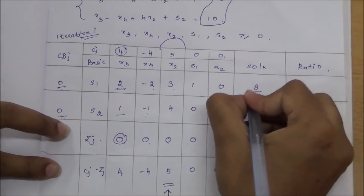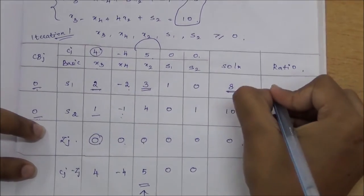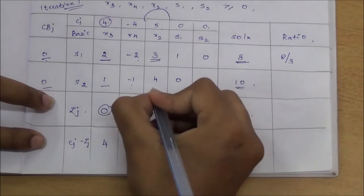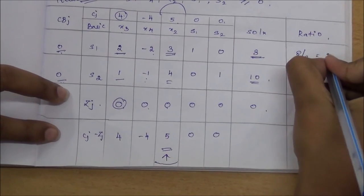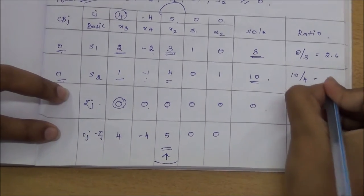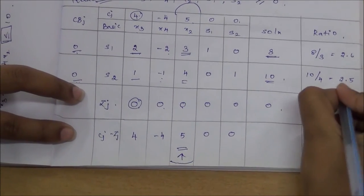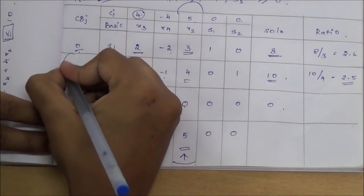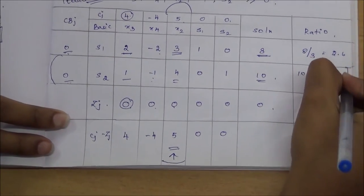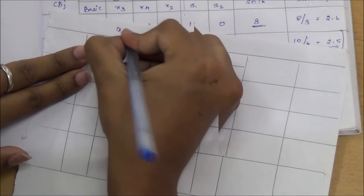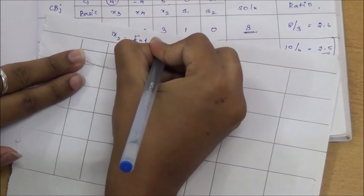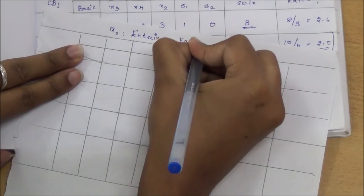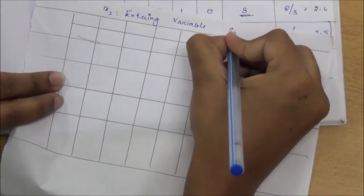To find the leaving variable, we compute ratios: 8 ÷ 3 = 2.67 and 10 ÷ 4 = 2.5. The smallest ratio is 2.5, so s2 is the leaving variable. Therefore x2 is the entering variable and s2 is the leaving variable for this iteration.